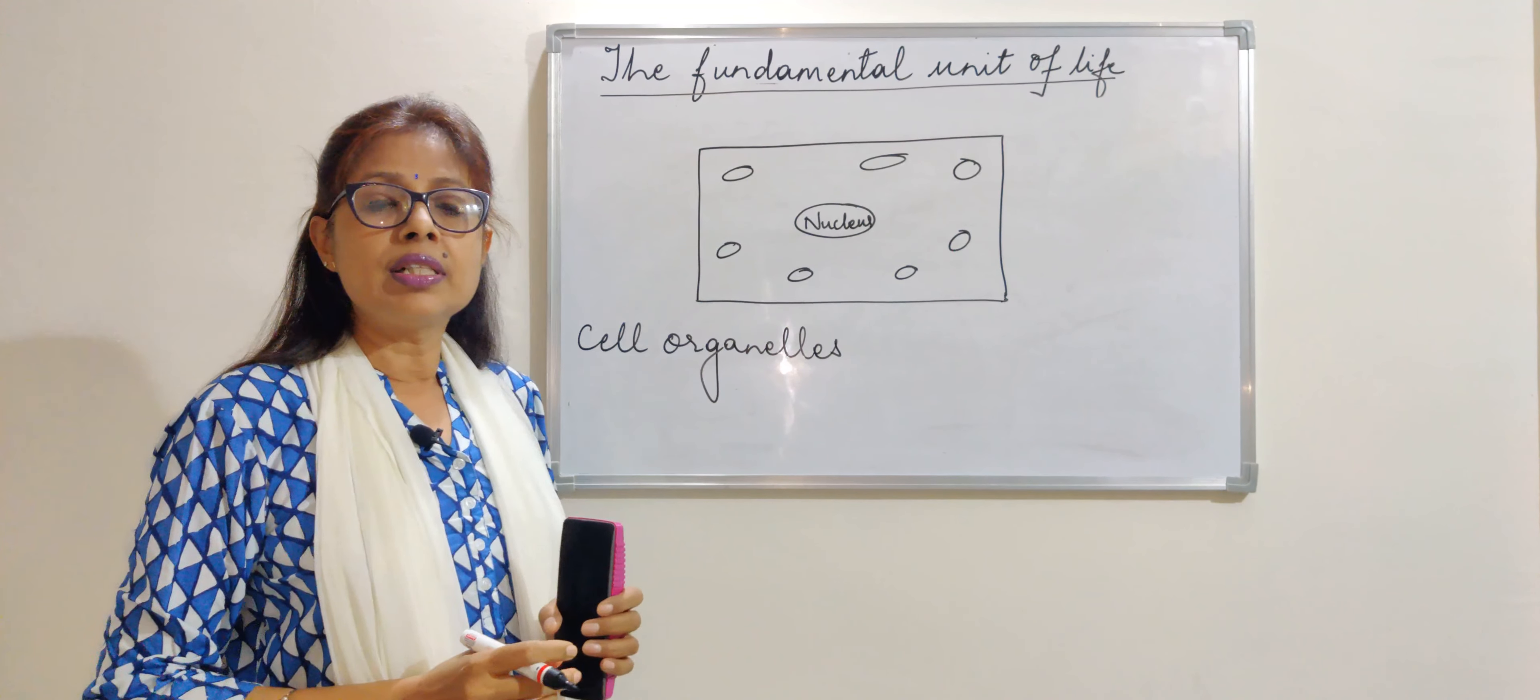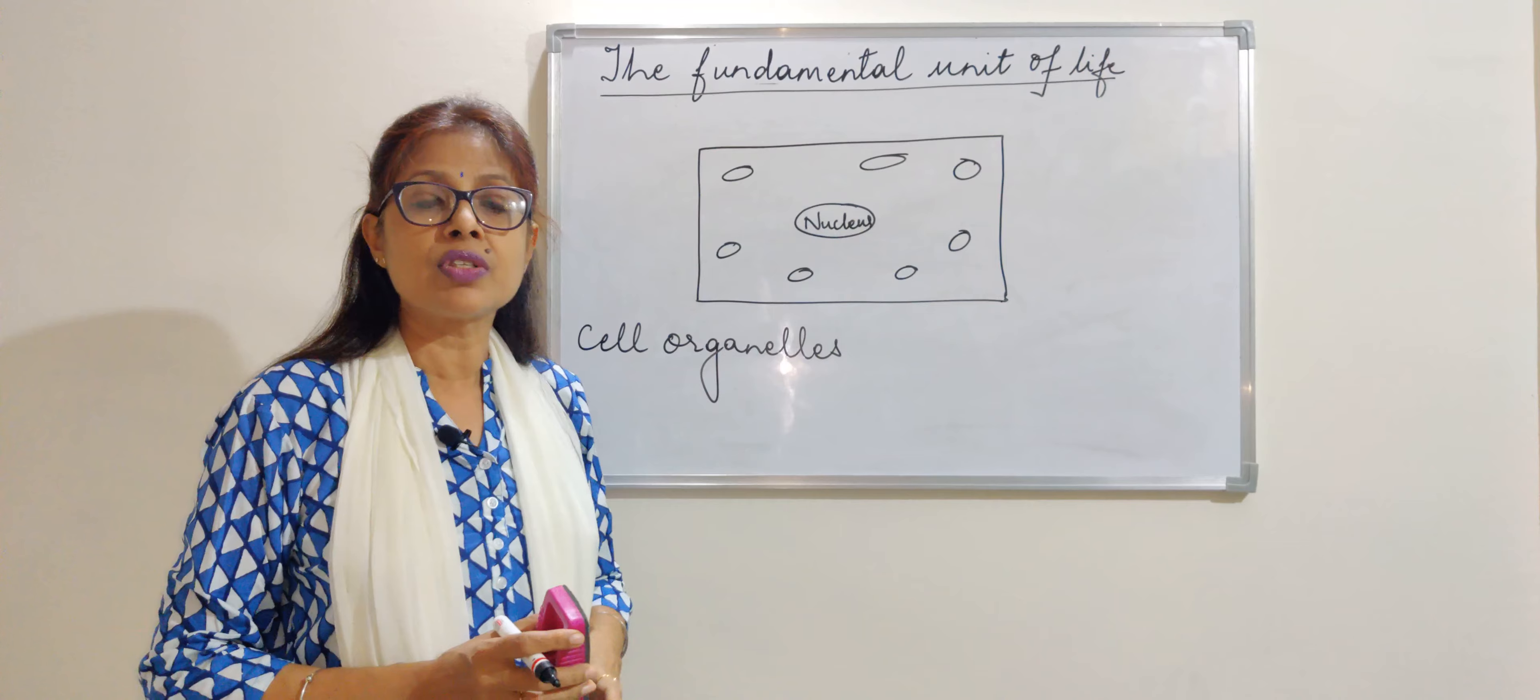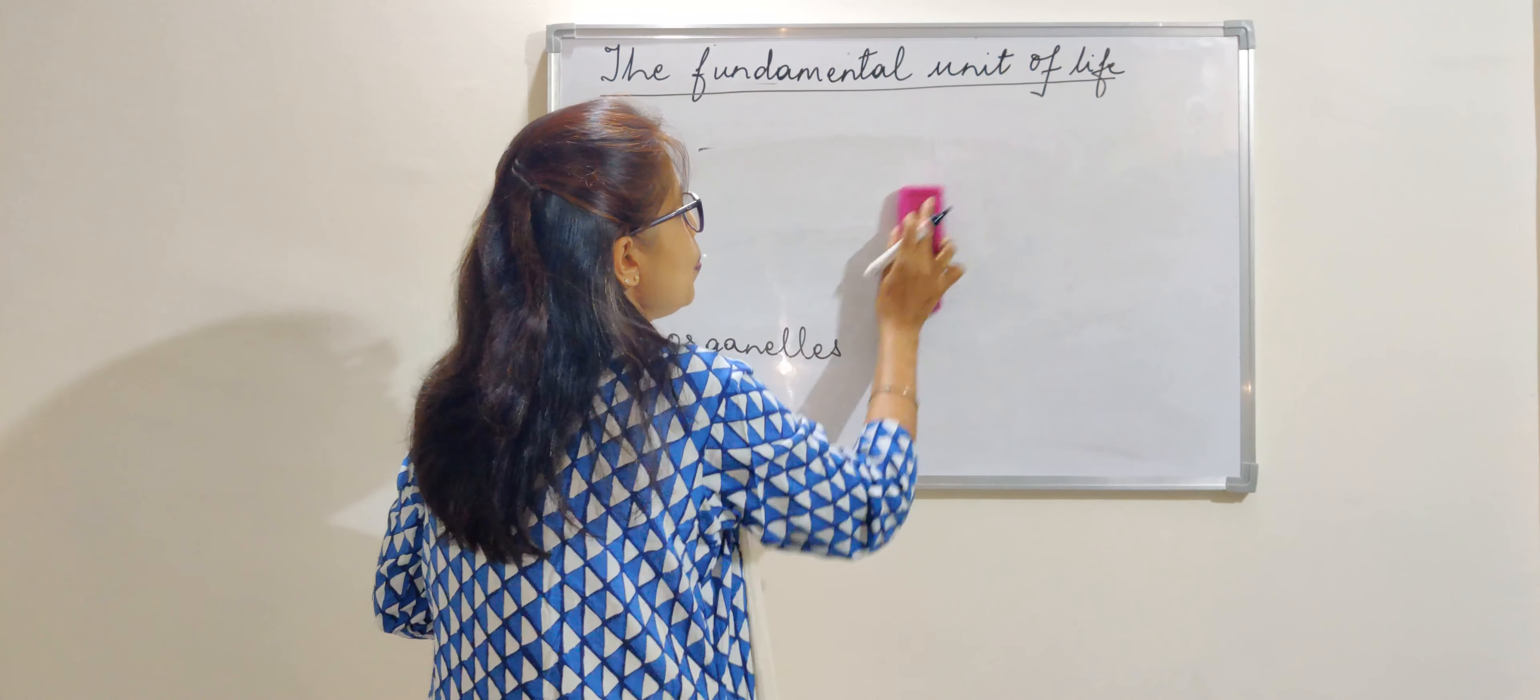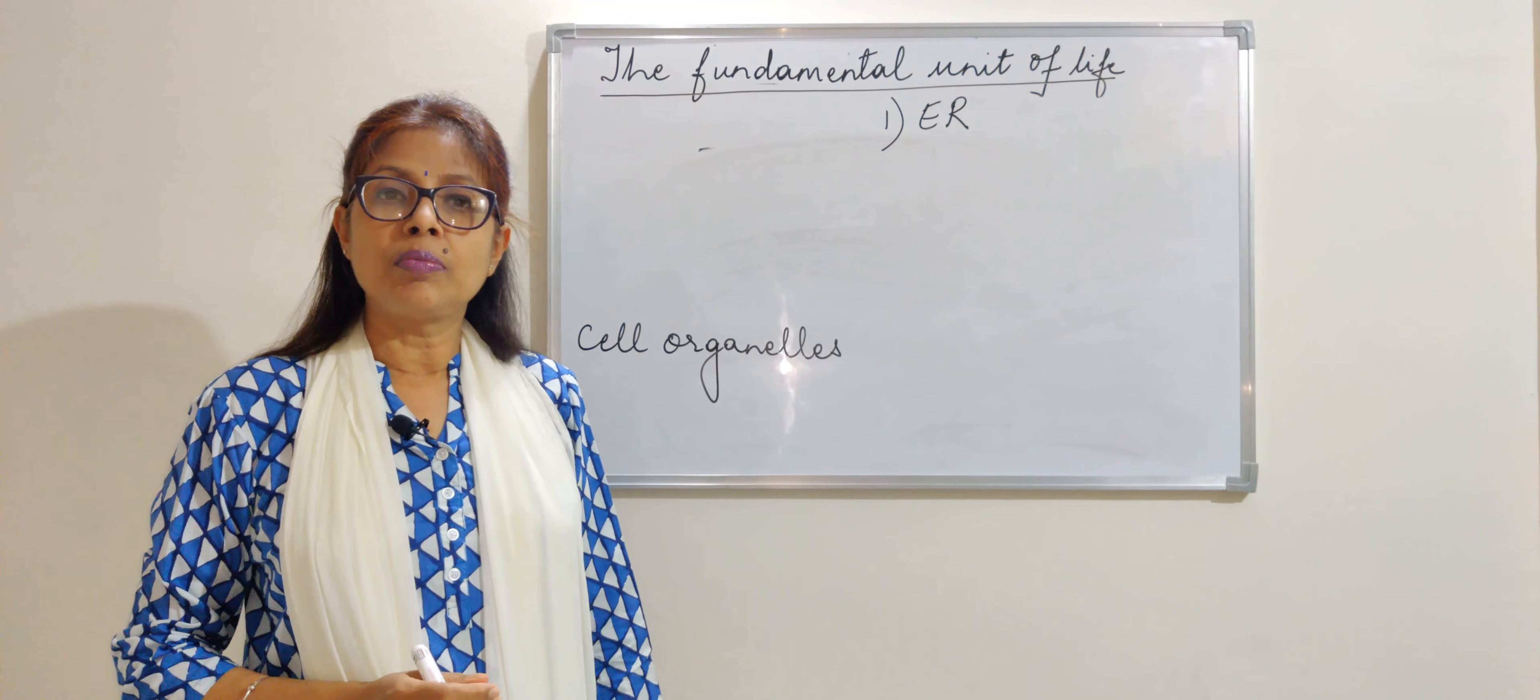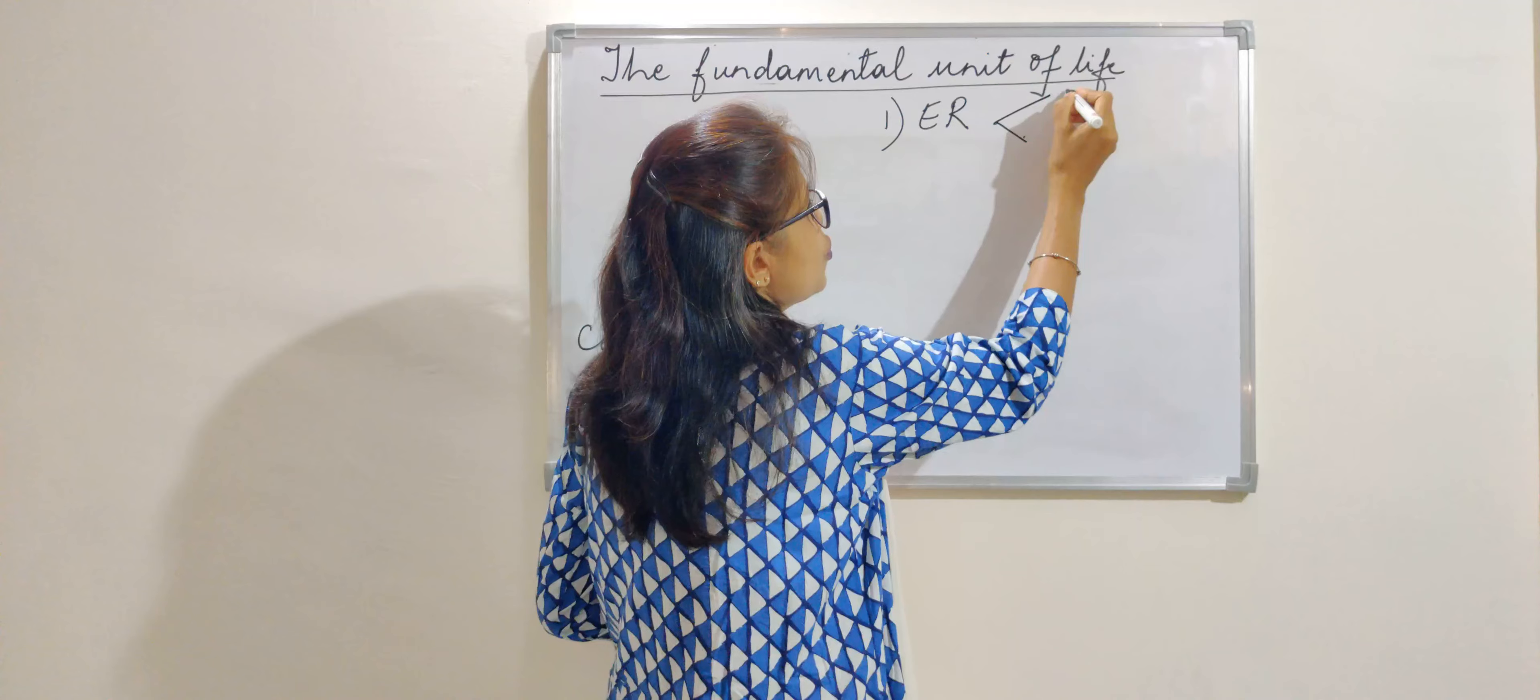Now in case of cell organelles, there are many cell organelles that we have to study. They are present and suspended and they keep moving inside the cell because of the presence of the cytoplasm. The first cell organelles that we are going to study is the endoplasmic reticulum, which is also known by the short form ER. Its main function is to transport things within the cell. This endoplasmic reticulum is of two types.